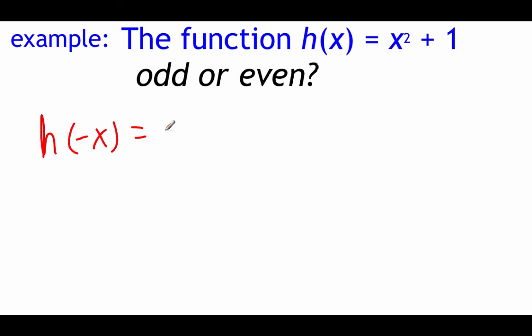So we plug in a negative x, so negative x squared plus 1, and now we work on cleaning this up. Well, when we square a negative, it becomes positive, so we get x squared plus 1, which is the exact same thing that we started with. That's our function h of x, so it means that this function is even.